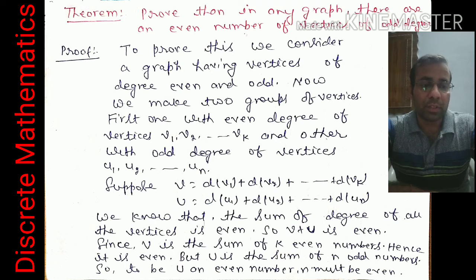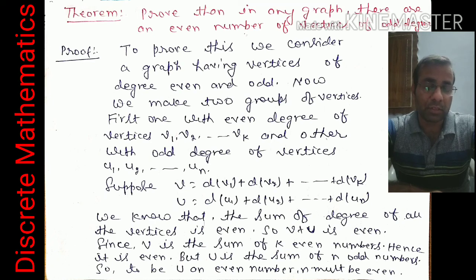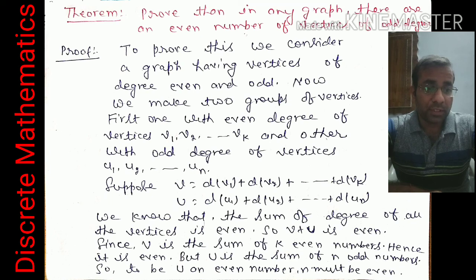The sum of all degrees equals deg(v1) + ... + deg(vk) + deg(u1) + ... + deg(ul). By the previous theorem, the total sum is even. Let V = sum of even-degree vertices and U = sum of odd-degree vertices. Then V + U is even. Since V is already even, U must also be even. But U is the sum of n odd numbers, so for U to be even, n must be even. This proves the theorem.